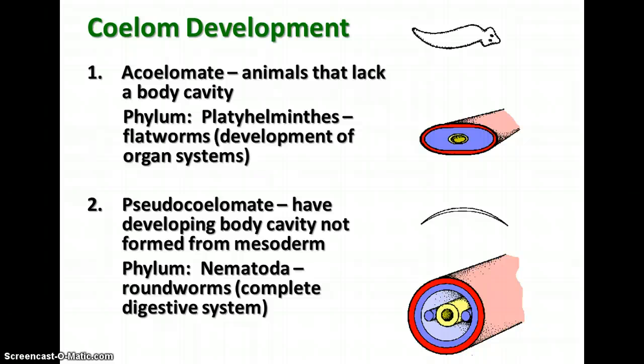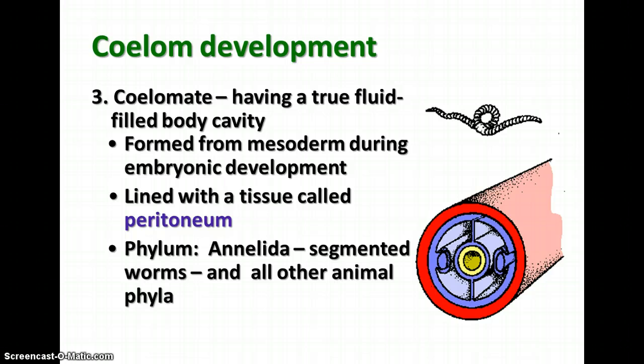Second, we have the pseudocoelomate — 'pseudo' meaning false. These have a developing body cavity not entirely covered with mesoderm. The one phylum that fits this category is Nematoda, the roundworms. They do have a complete digestive system, but their body cavity has the ectoderm lined with mesoderm while the endoderm is not covered with mesoderm. Finally, we have the coelomates, which have a true fluid-filled body cavity completely lined with and developed entirely from mesoderm tissue, lined with a tissue called peritoneum. The first phylum in which we see this is Annelida, the segmented worms, and all other animal phyla after that — including the arthropods, the mollusks, the echinoderms, and the chordates, which we belong to.